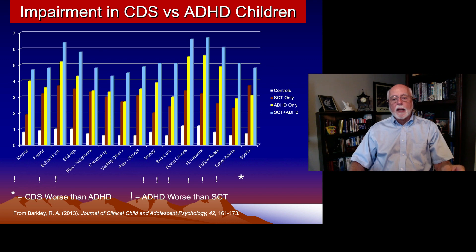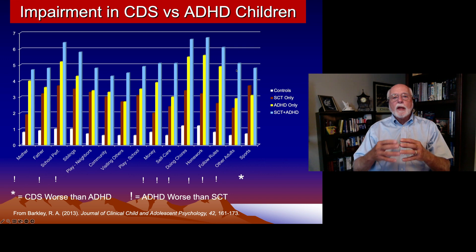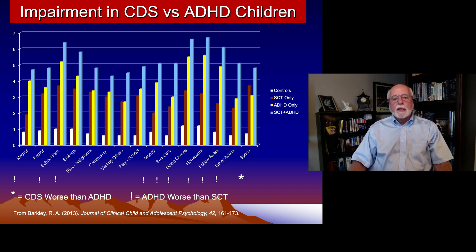Here's a study I did of a national sample of children, looking at 15 different domains of impairment, comparing four groups: typical children, those only having SCT, those only having ADHD, and those having both. The first thing to notice is that children with both disorders were far more impaired than those with either attention disorder alone — indicating that the disorders, when they coexist, are additive. They don't duplicate or substitute for each other. This is yet more evidence that CDS is a unique disorder from ADHD; when they co-occur, CDS adds further to impairment.